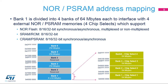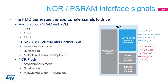Bank 1 is used to address up to four NOR Flash memories or PSRAM devices. This bank is split into four NOR or PSRAM sub-banks of 64 megabytes each, with four dedicated chip selects to interface with 8- or 16-bit synchronous or asynchronous NOR Flash in multiplexed or non-multiplexed mode, 8- or 16-bit asynchronous SRAM and ROM, and 8- or 16-bit synchronous or asynchronous PSRAM memories.